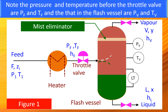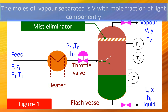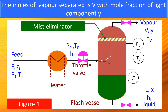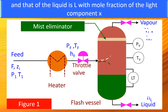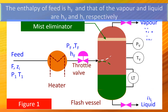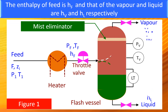Note: the pressure and temperature before the throttle valve are PF and TF, and those in the Flash vessel are PV and TV. The moles of vapor separated is V with mole fraction of light component Y, and the liquid is L with mole fraction of light component X. The enthalpy of the feed is HF, and those of the vapor and liquid are HV and HL respectively.